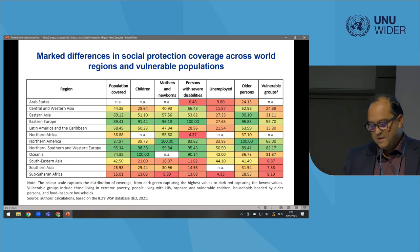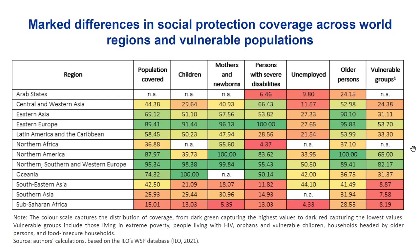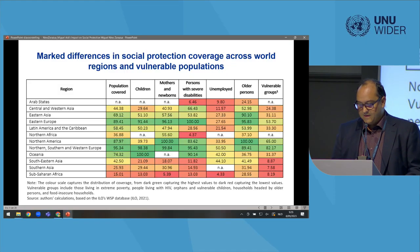However, if you look at the distribution of coverage across regions, you can see a substantial difference and inequality in terms of coverage. If you look at this table, the colors will give you a hint of the distribution of coverage, moving from dark green to dark red, with dark green showing a higher share of the population covered by specific types of programs and by different types of vulnerable populations. These distributional characteristics of the expansion also reflect a lot of policy choices.